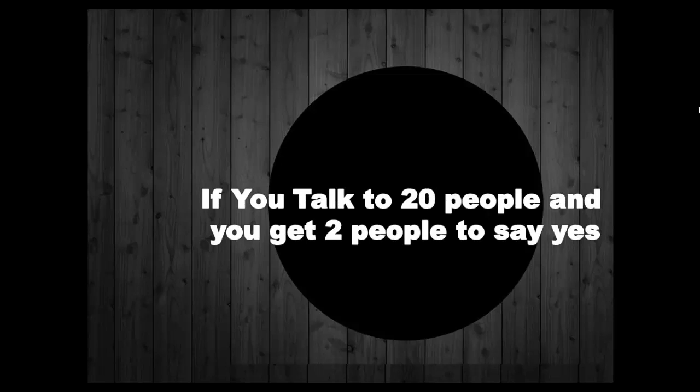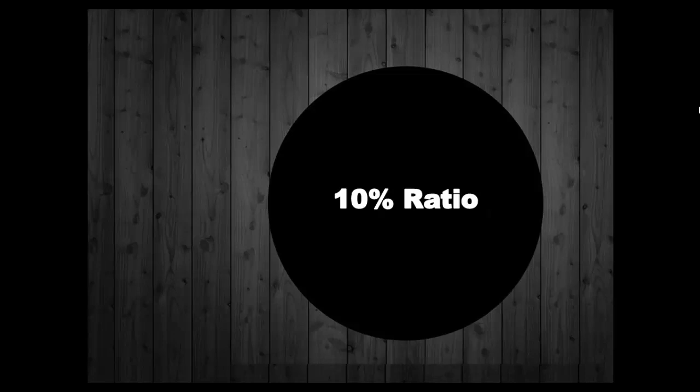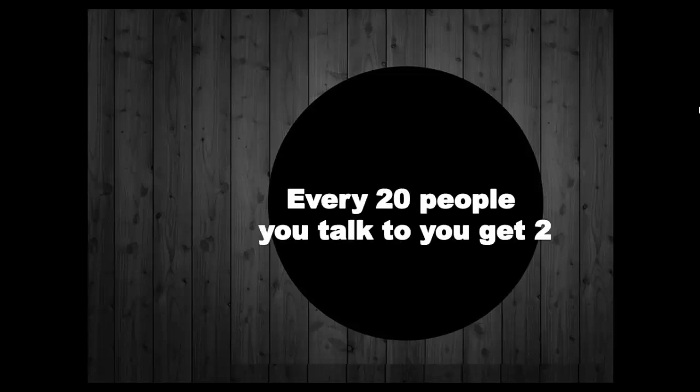Here's an example: if you talk to 20 people and you get two people to say yes, you have a 10% ratio. So if you talk to 20 and get two, multiply that times five — you talk to 20 people a day, that gives you two yeses. So if you wanted to set 10 appointments a week, you need to be talking to 20 people a day.